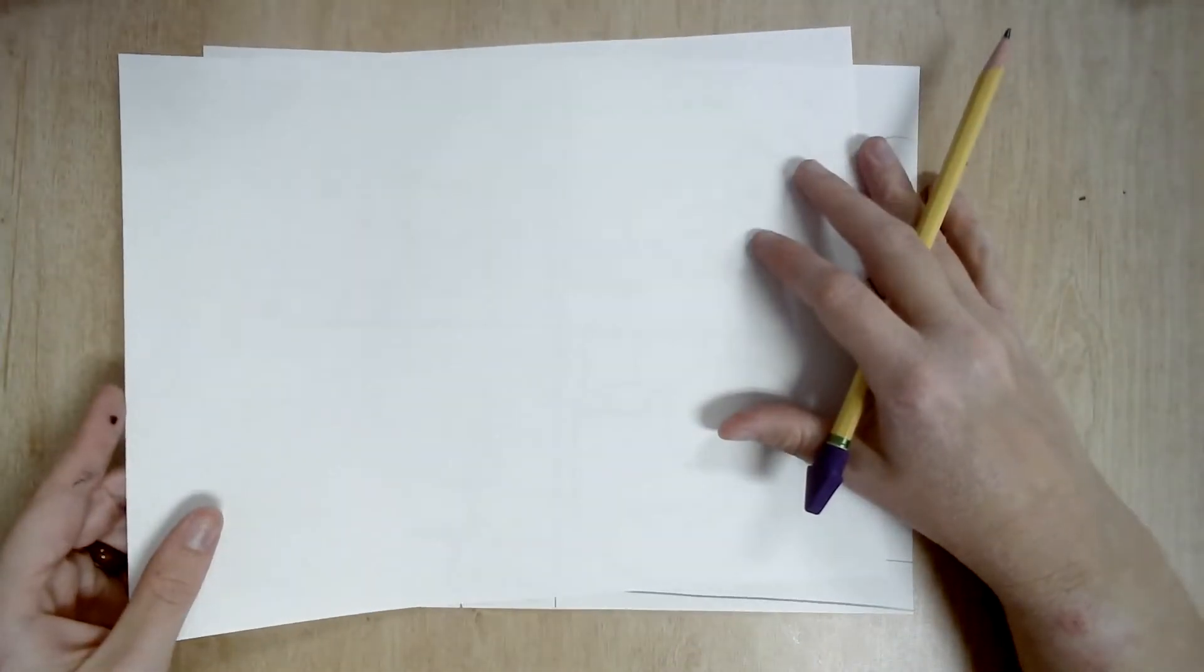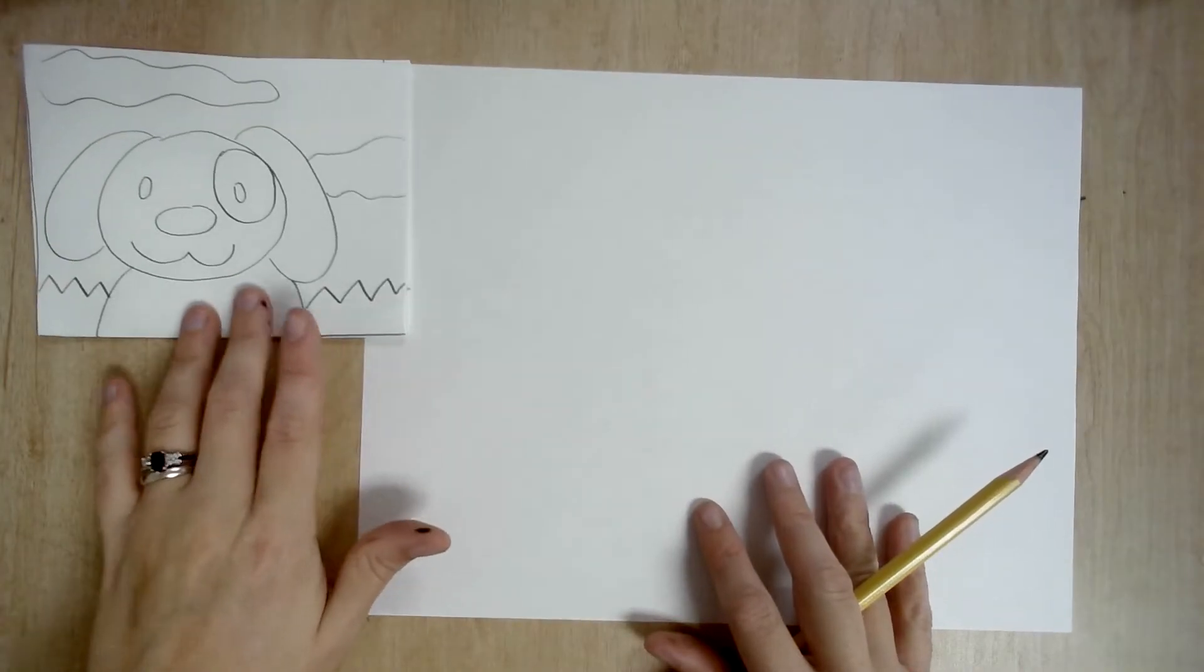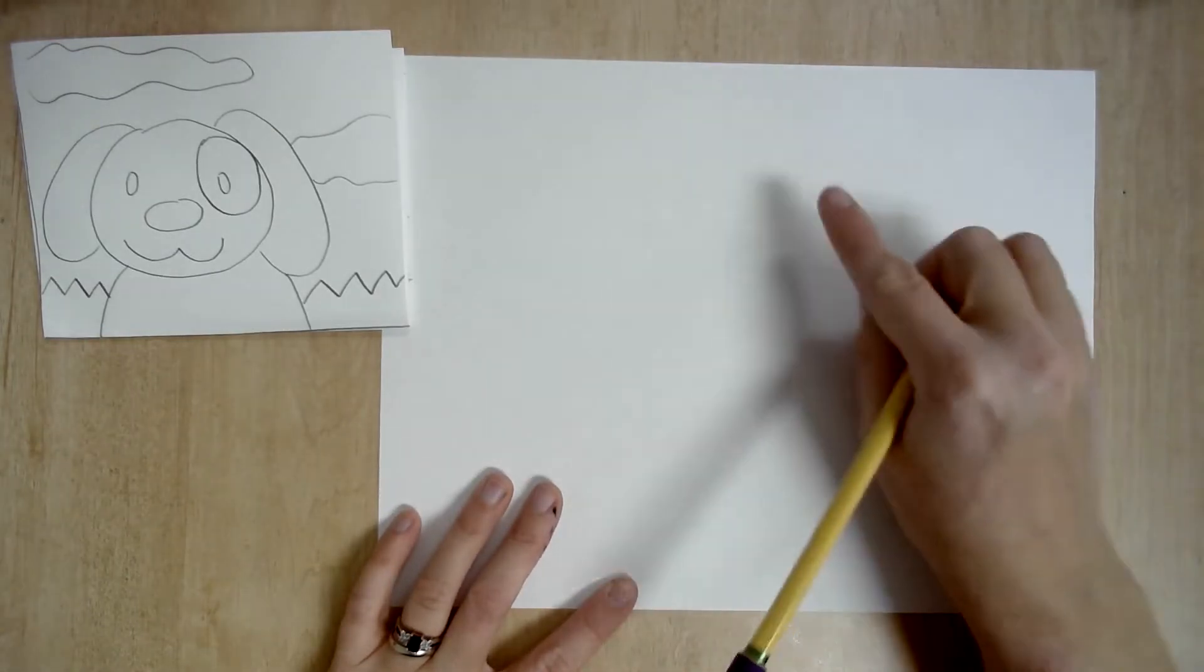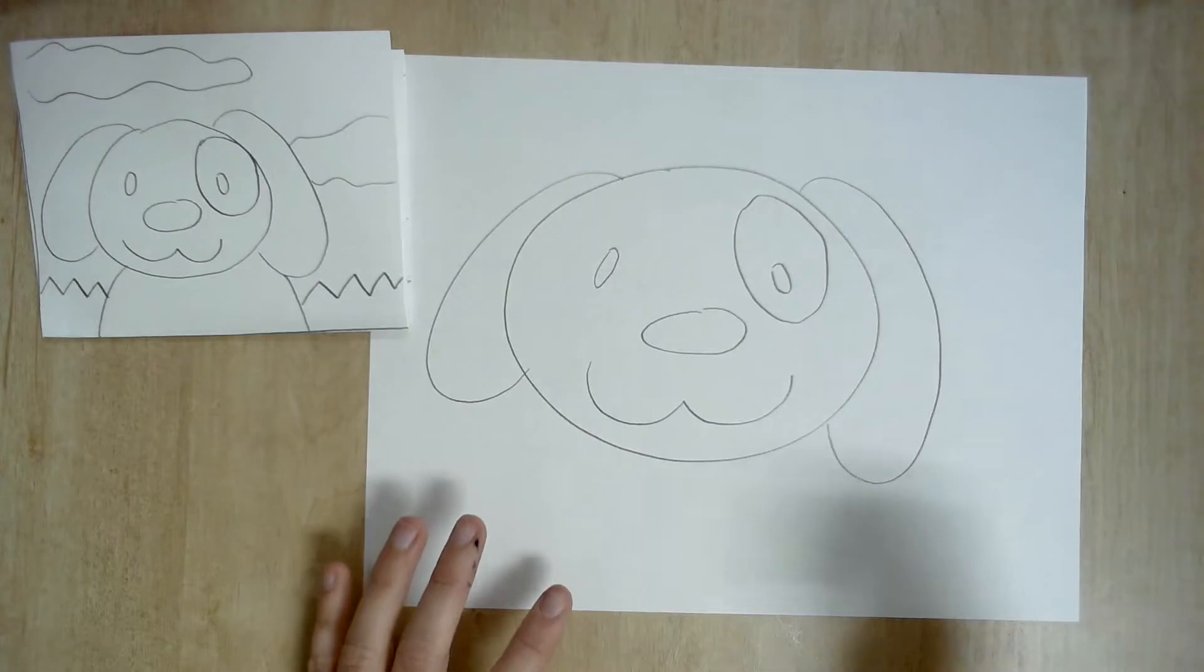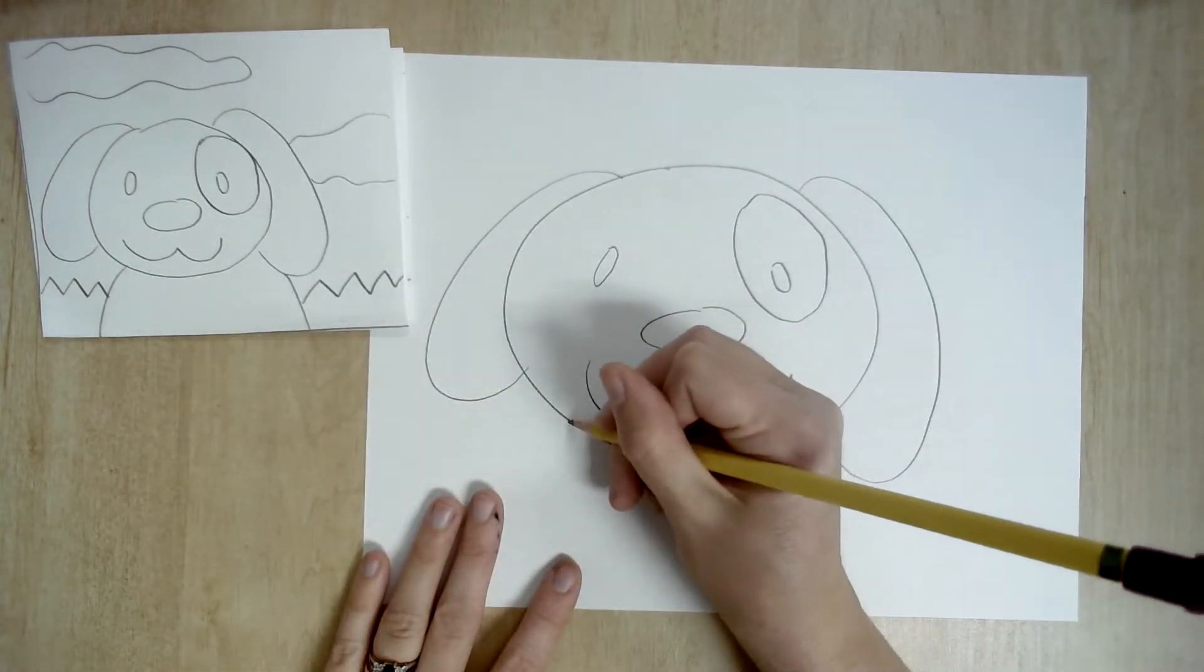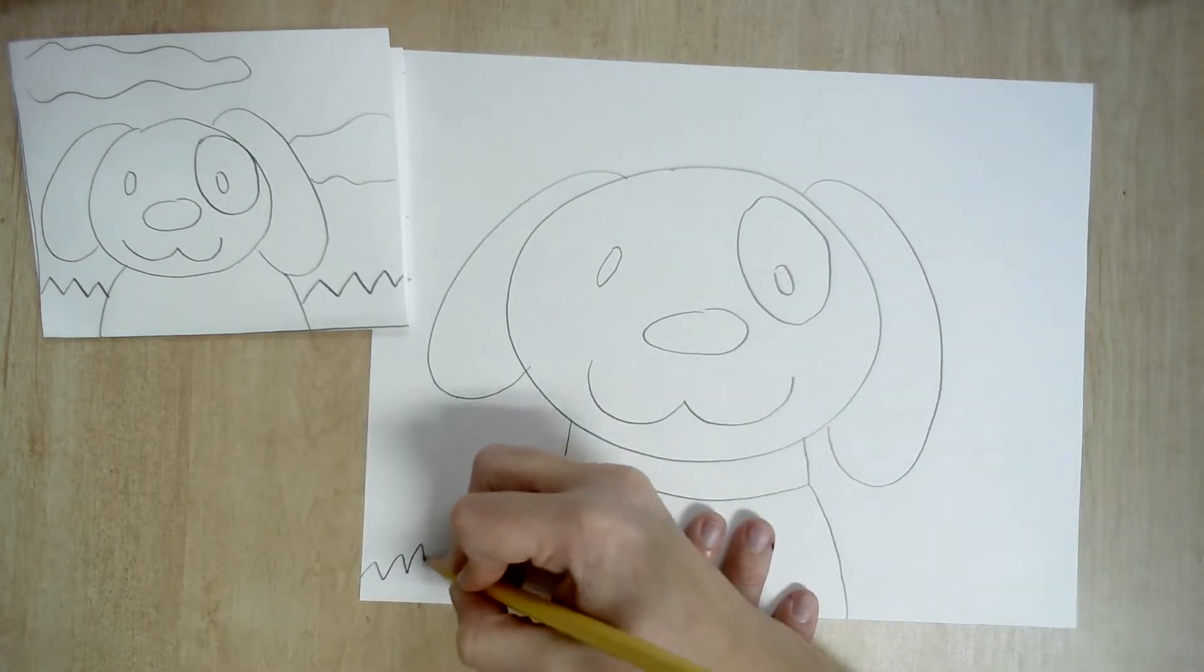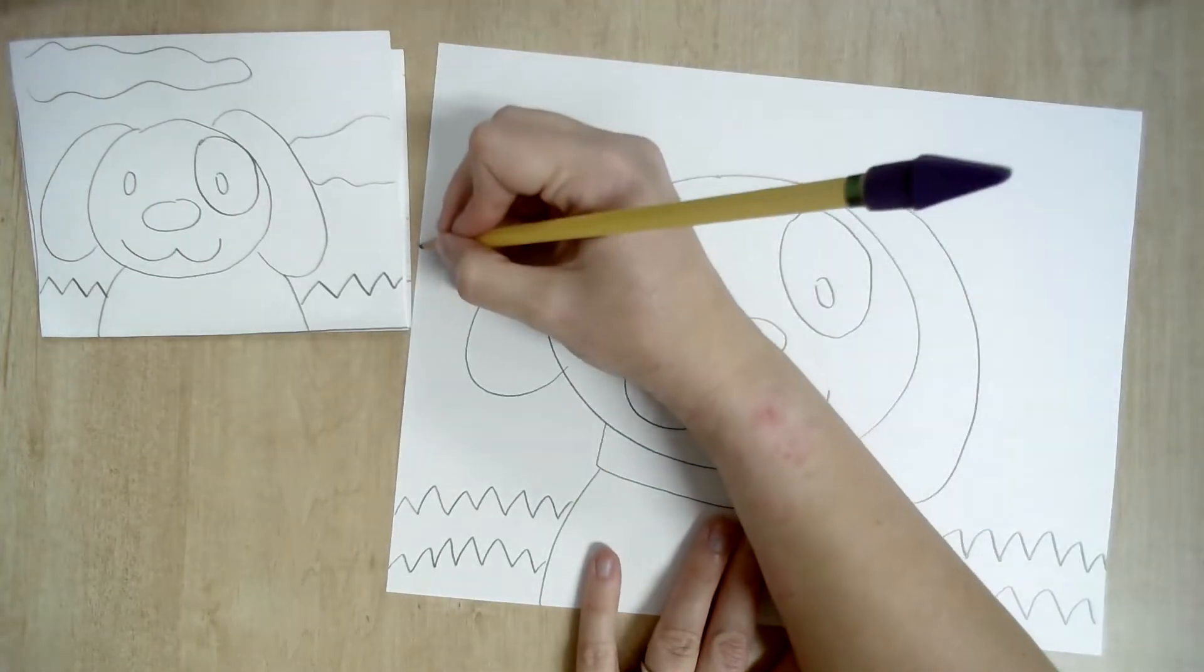You're going to get another sheet of paper. And you're going to draw your thumbnail idea full size. So I'm going to draw my dog. So I have to make him bigger to fill up the whole paper. And since this is a thumbnail, I can change some things up. I think I'm going to give him this collar. The zigzags for the grass and some clouds.